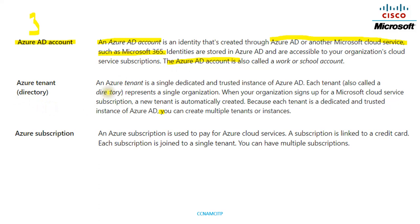The next concept is Azure tenant, also called a directory. An Azure tenant is a single, dedicated, and trusted instance of Azure AD. Each tenant represents a single organization. When your organization signs up for a Microsoft cloud service subscription, a new tenant is automatically created. Because each tenant is a dedicated and trusted instance, you can create multiple tenants or instances.